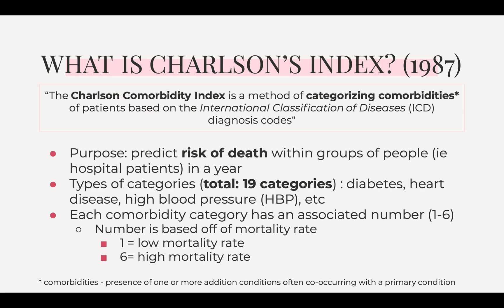The purpose of this index is to predict the risk of death within groups of people — most likely hospital patients — in a year. Each of these categories has an associated number based on its mortality rate. If it's assigned a one, it doesn't have a very big effect on mortality, but if it's weighted as a six, it has a really high mortality rate.